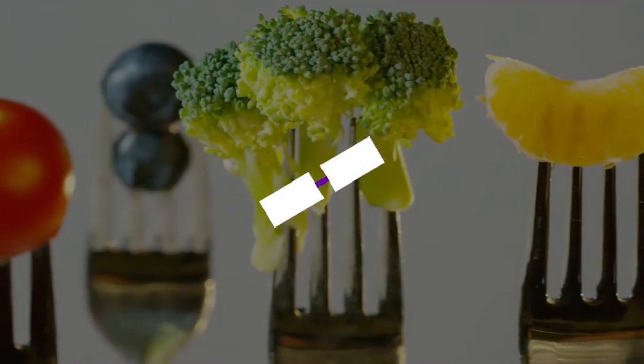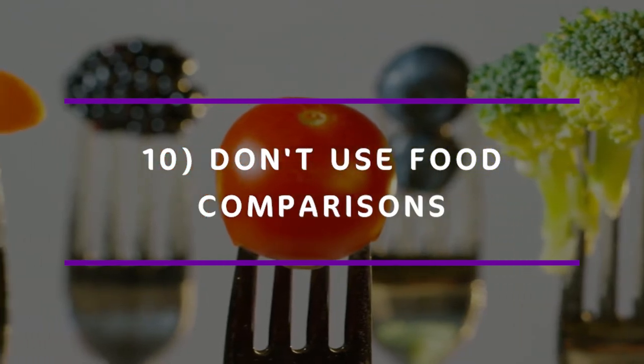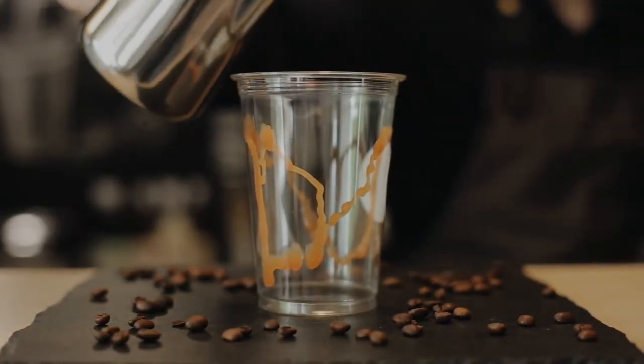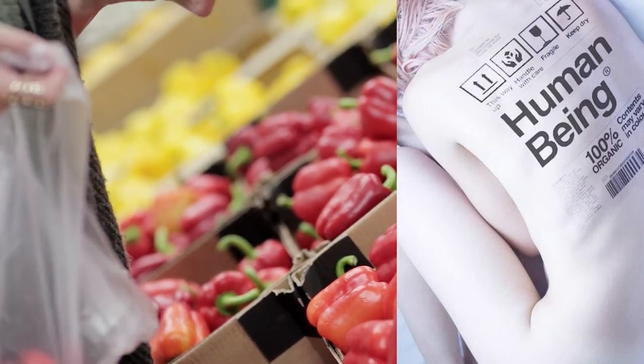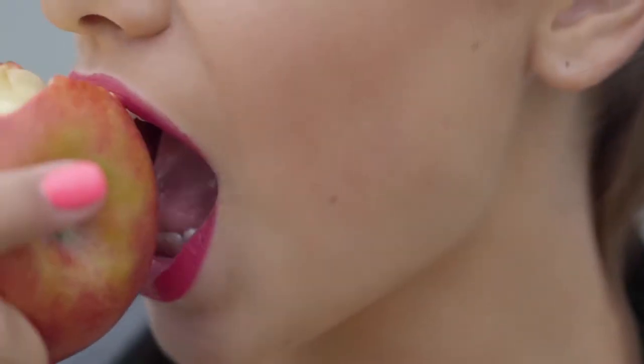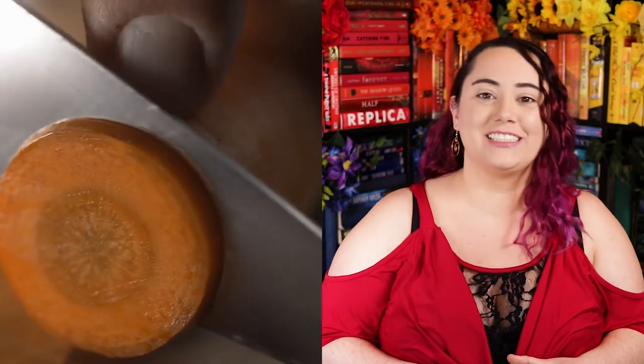Tip number ten: as a general rule, don't use food comparisons to describe any physical trait ever — unless your main character is a chef and comparing everything to food is just their thing. Otherwise, don't say 'skin the color of caramel,' say 'golden brown.' Don't say 'her breasts were like juicy ripe melons' — say basically anything else. Comparing someone's physical traits to food is not only cliché but dehumanizing, as it links a person to something that exists purely to be consumed. It can also be seen as fetishizing and uncomfortably sexual — there are just too many strange undertones.